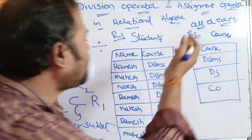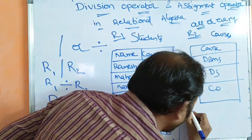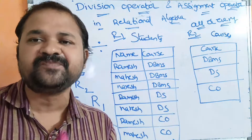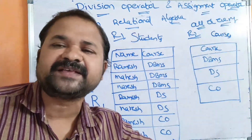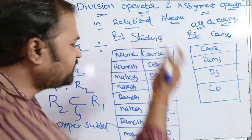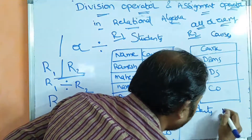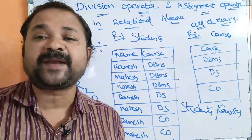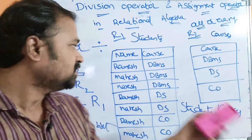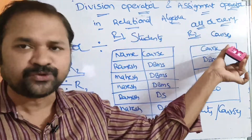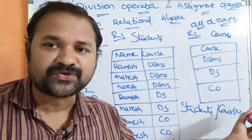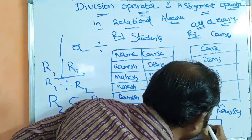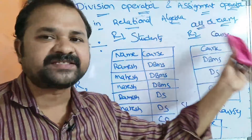Now, let us see what R1 division R2 returns. R1 division R2 returns attributes which are present in R1 but not present in R2. Here R1 represents the Students relation and R2 represents the Courses relation. The attribute 'Course' is present in R2, but 'Name' is not present in R2. So the result contains the attribute 'Name', because the name attribute is present in R1 but not present in R2.